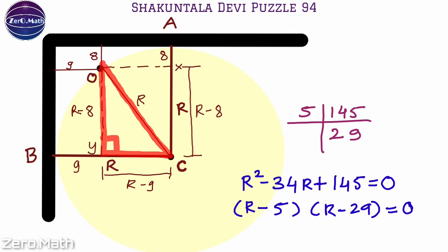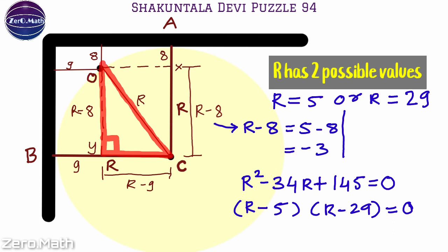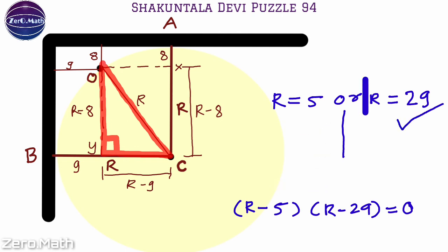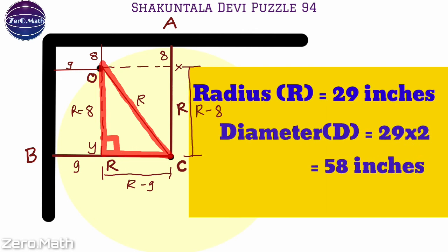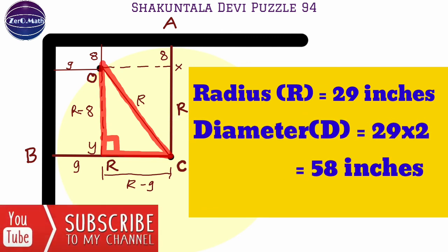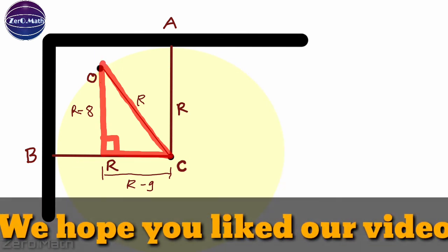There are two possible values of r: r = 5 or r = 29. If r = 5, then r − 8 = −3, which is not possible because a length cannot be negative. Hence, the radius of the circle must be 29 inches. Since the problem asks for the diameter, the diameter is 29 × 2 = 58 inches. That is our answer!